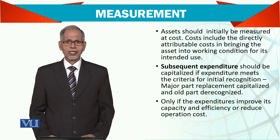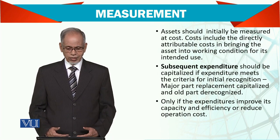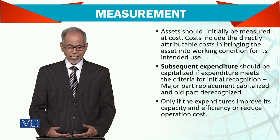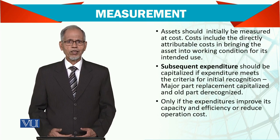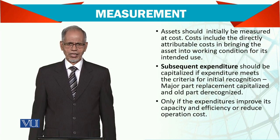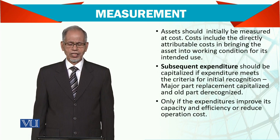Subsequent expense, if it improves the efficiency of an asset, will be added to the cost of the asset. But if it is not improving the efficiency, then it should not be added.